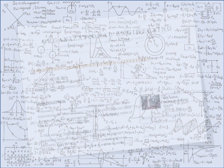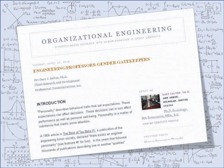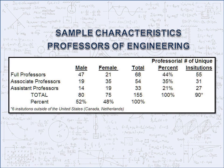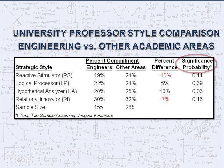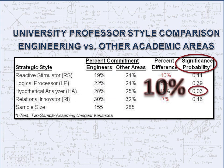This textual research blog details the data and the analytical methods that are summarized here. That data includes 155 tenured and tenure-track engineering professors that were compared to 285 non-engineering professors. The only significant difference in their information processing approach is that engineers tend to put about 10% more reliance on analysis.